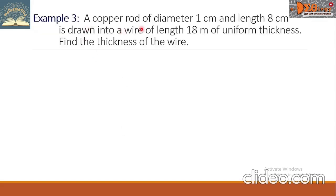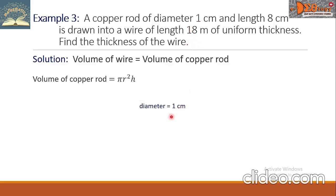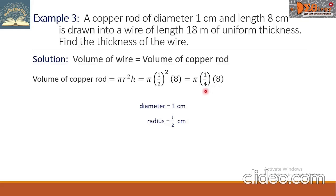Example 3. A copper rod of diameter 1 cm and length 8 cm is drawn into a wire of length 18 meters of uniform thickness. Find the thickness of the wire. The volume of wire equals the volume of copper rod. Volume of copper rod = π × (0.5)² × 8. Simplifying: 2π cubic centimeters.